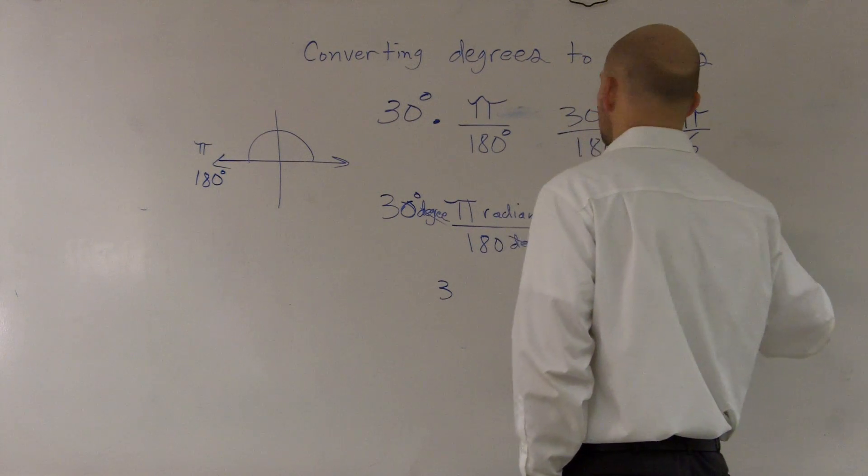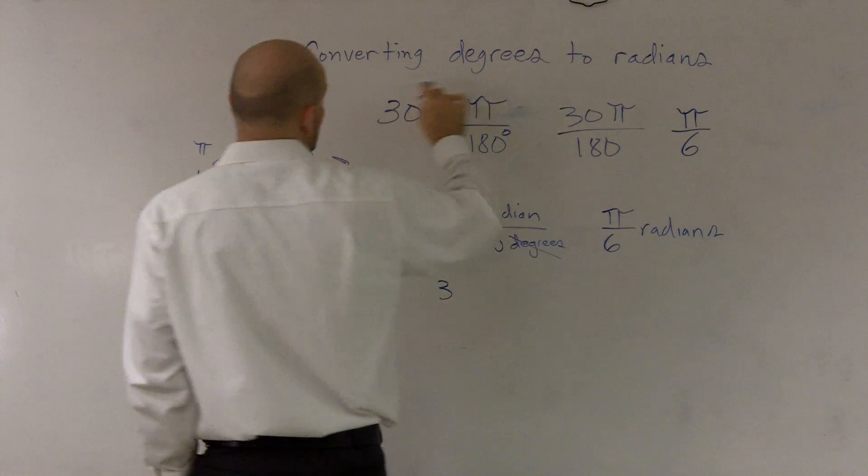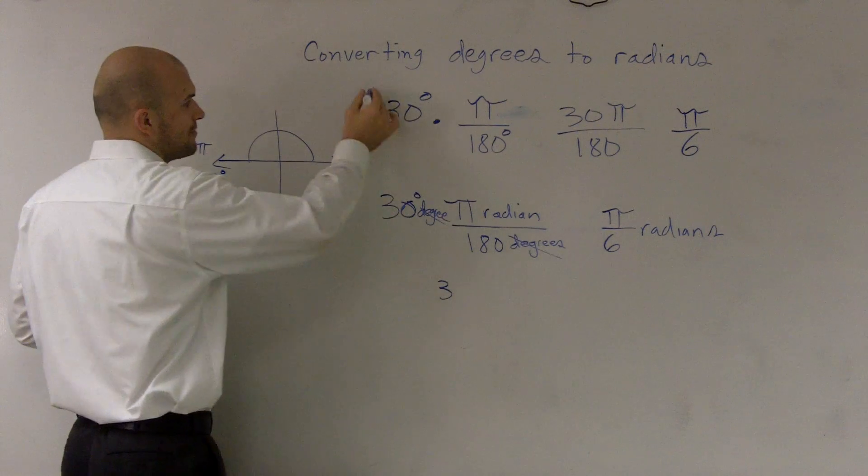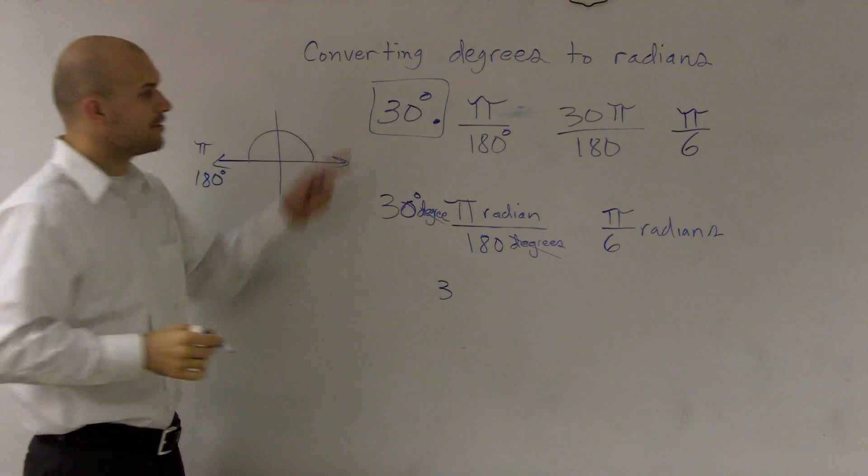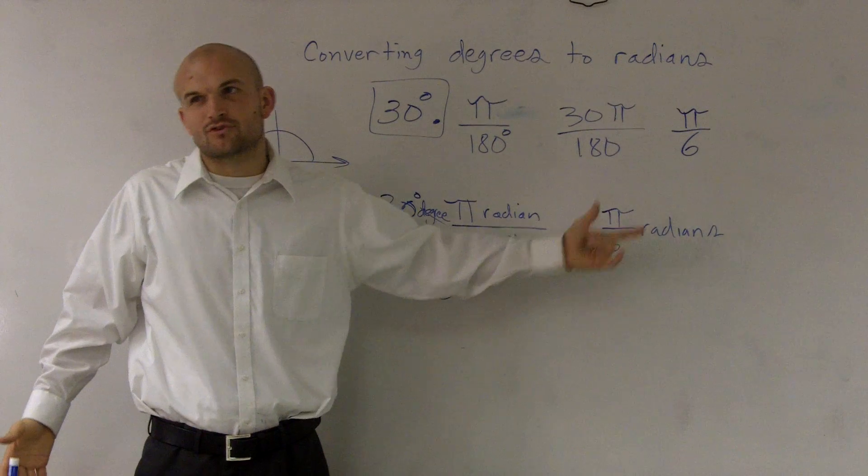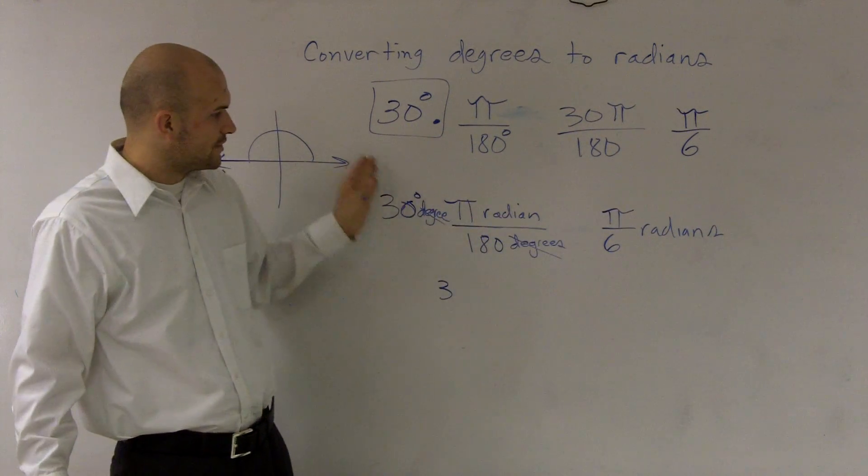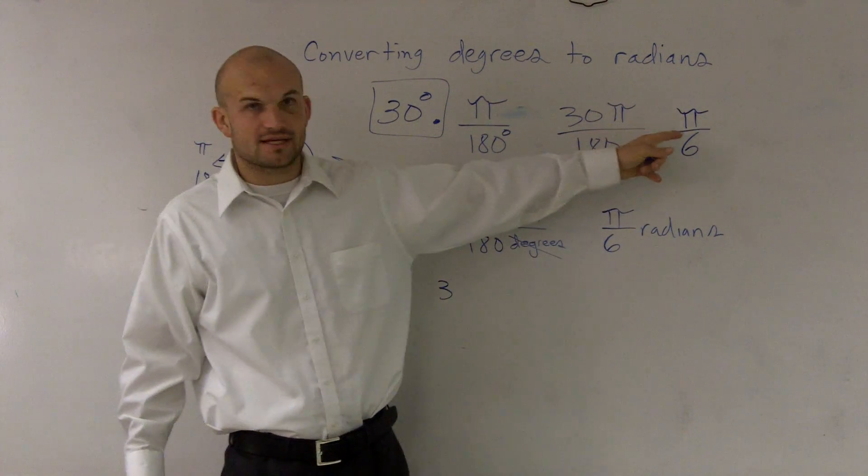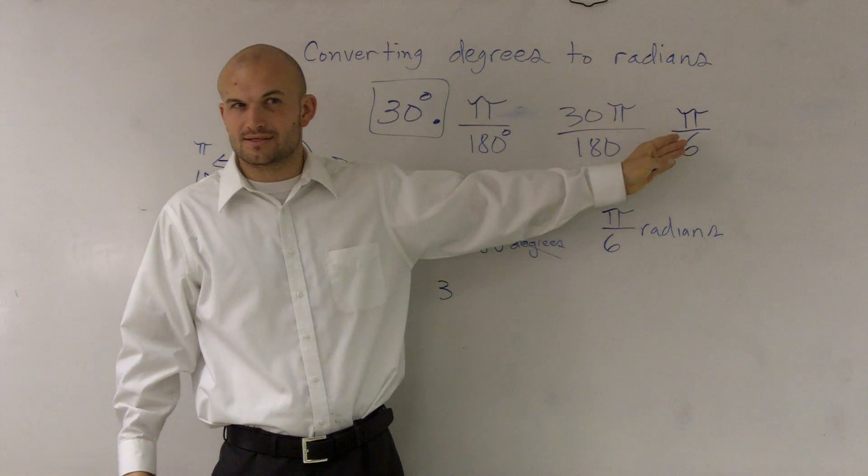So what I have just done is I have my answer converting degrees to radians. So what is 30 degrees? 30 degrees is the same thing as pi over 6 radians. We don't really write the radians part, but you now understand how the degrees canceled out to give us radians. Does that make sense?